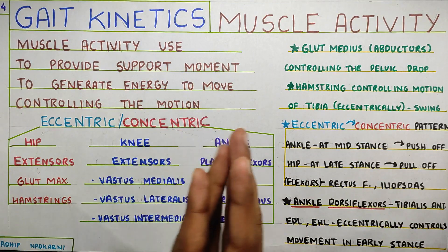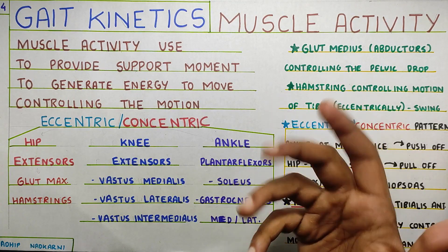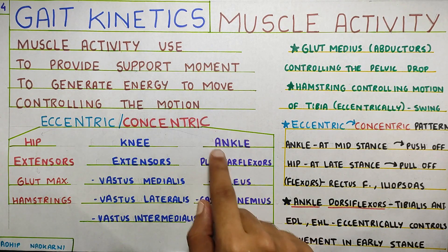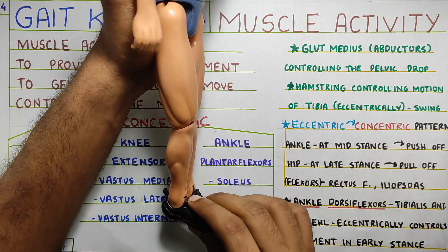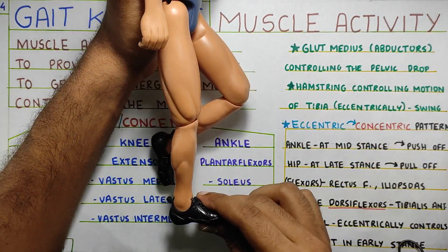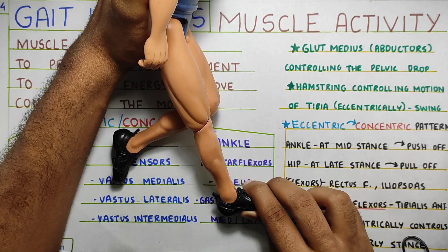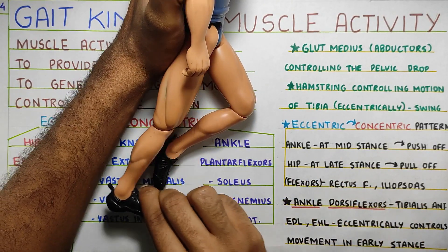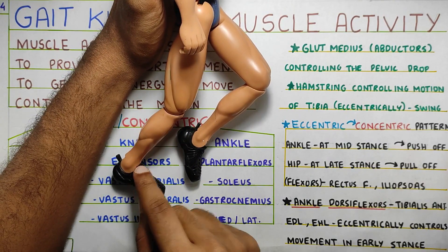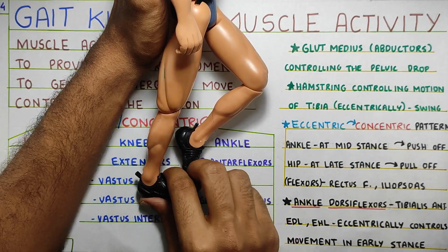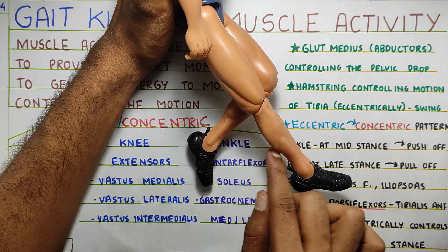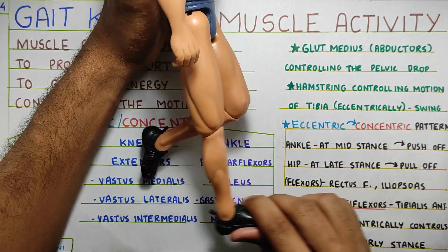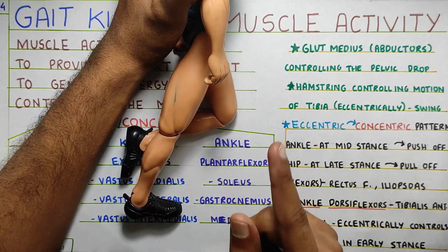Now let's move on to the ankle — plantar flexors. What are the plantar flexors? Soleus and gastrocnemius, which has two parts: medial and lateral. What will be the eccentric activity of plantar flexors at the ankle joint? In the stance phase, as you keep your foot on the ground, you are going backwards — from a plantar flexed position into a dorsiflexed position. The plantar flexors behind are lengthening, because they are in a contracted state at plantar flexion and lengthen as you move to dorsiflexion. They control this whole movement throughout, so there is eccentric activity of your plantar flexors here.